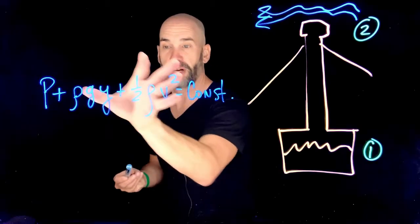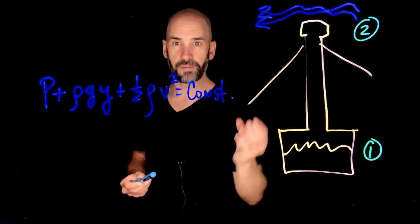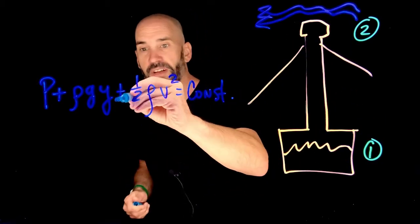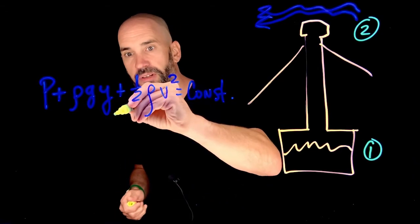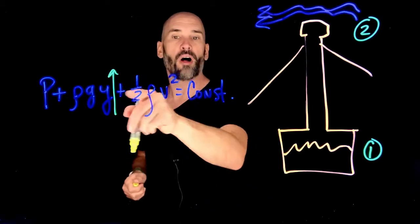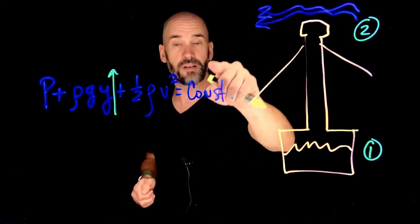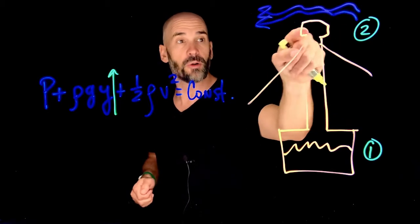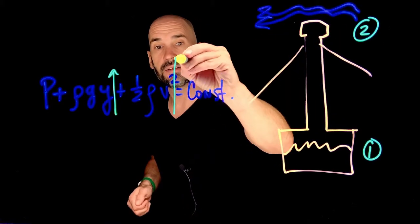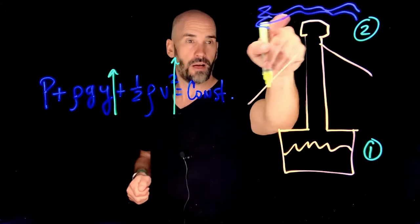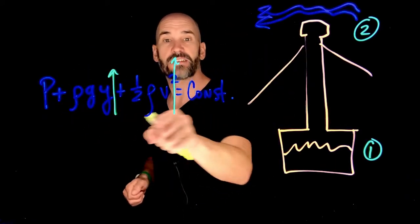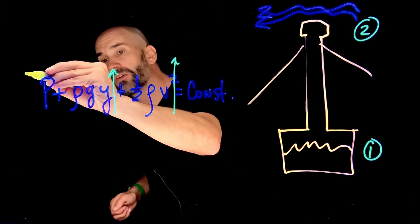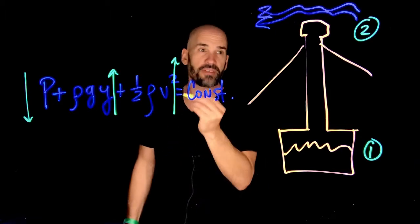Now, that means this expression must remain constant between here and here. So what changes between here and here? Well, we know that elevation increases, so I'm going to put an increasing elevation. But we also know that the velocity of the fluid up here is going to be fairly high because wind is blowing rapidly above here. So we have an increased velocity for the fluid up above here, which means that if this thing is going to remain constant and these two terms are increasing, the pressure must radically decrease.